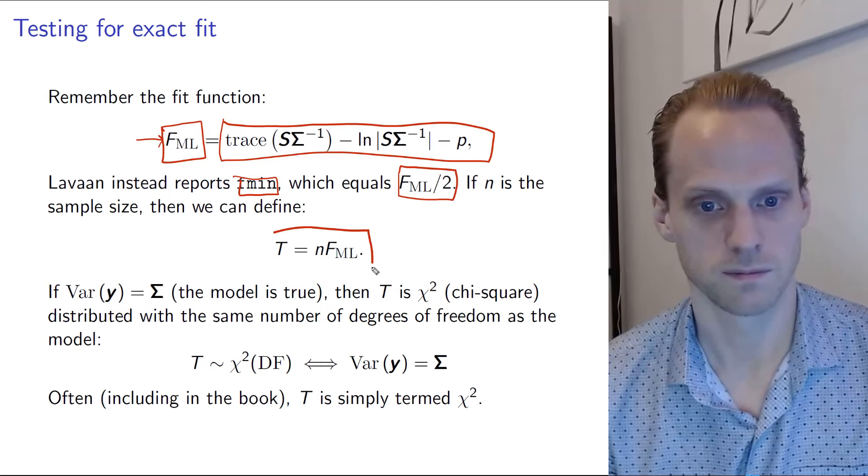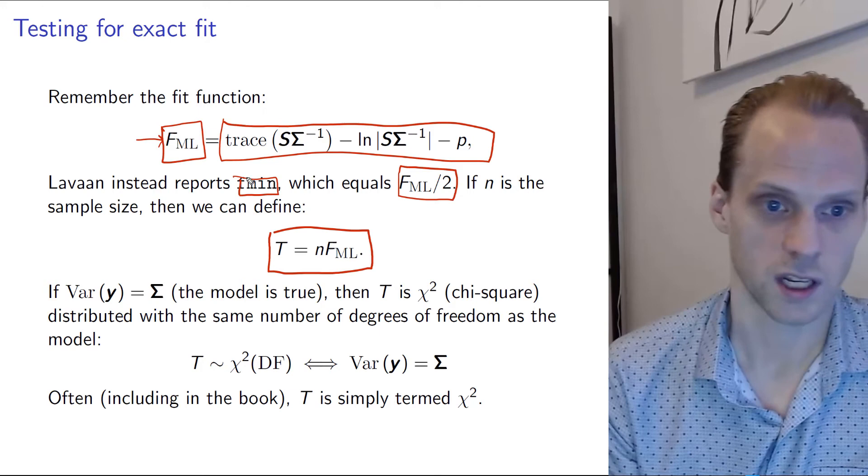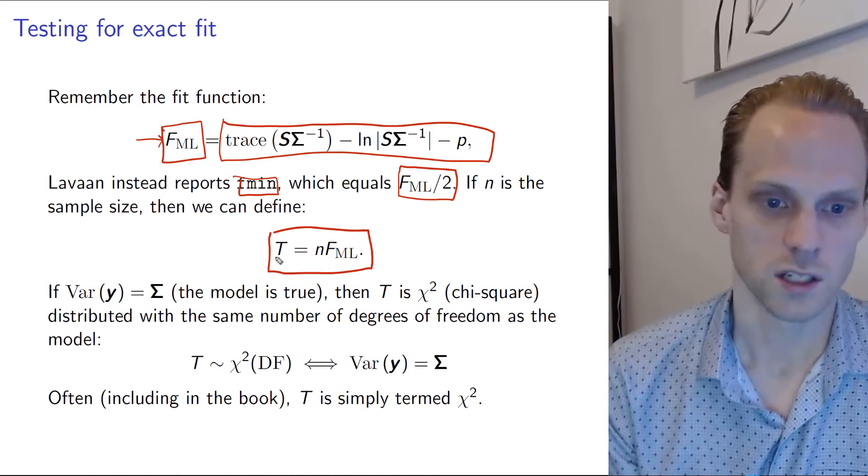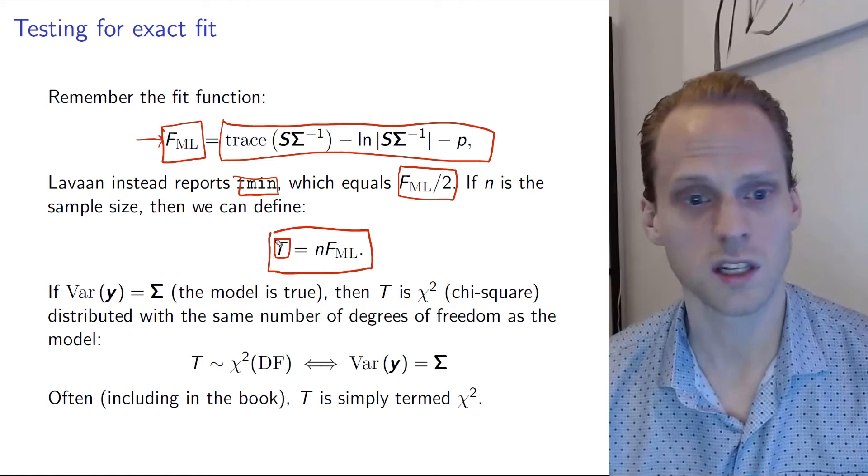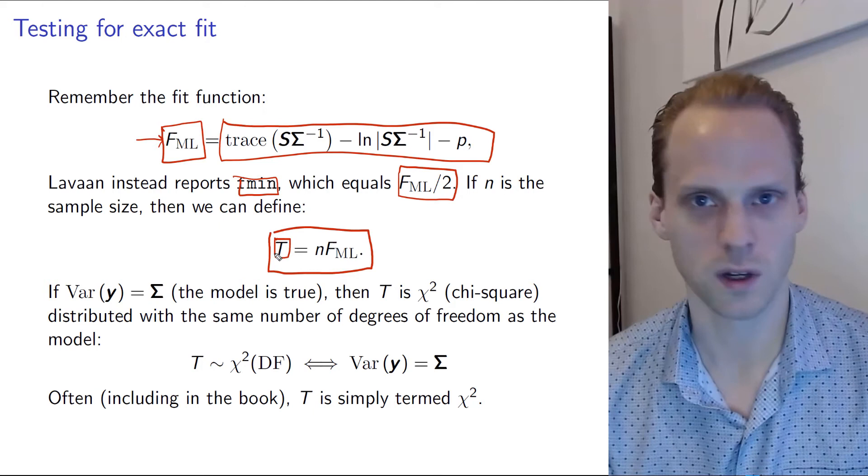This T equals N times FML. Or in the case of fmin, you have to multiply by 2 also. So this T is always reported. And this is probably the most important statistic that we find in structural equation modeling, that you always see reported in papers as well. And it's the first thing that the software will report when you ask it to print some information.